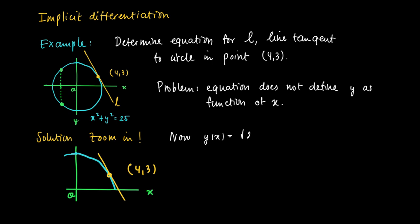And we are in the upper part, so we know that y of x equals the square root of 25 minus x squared. If we're close enough to 4,3, then we may solve y as a function of x.